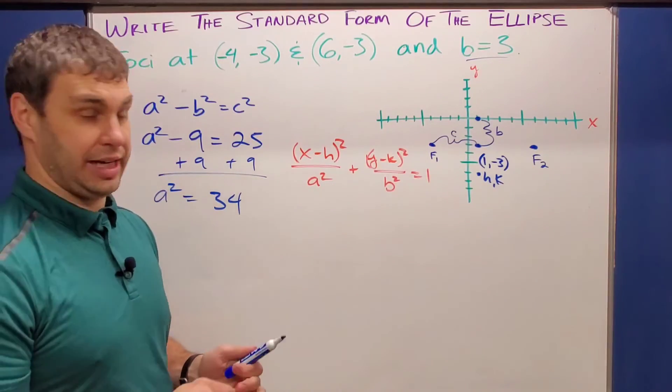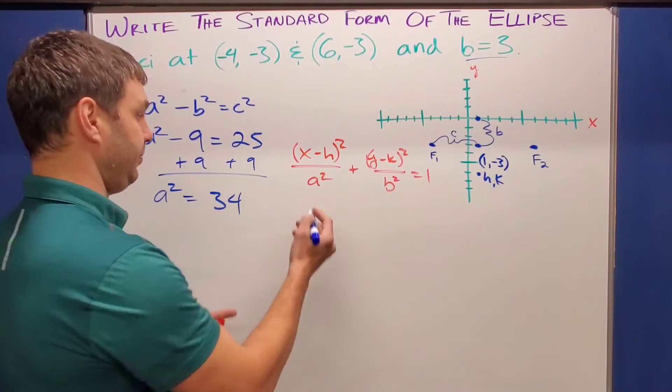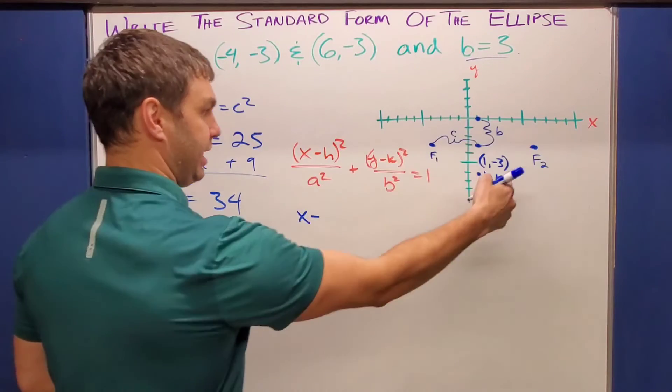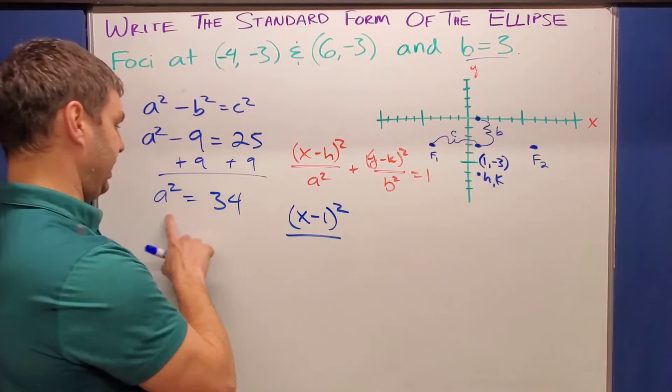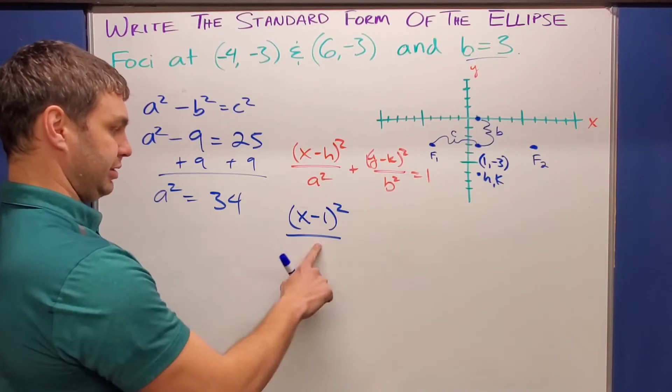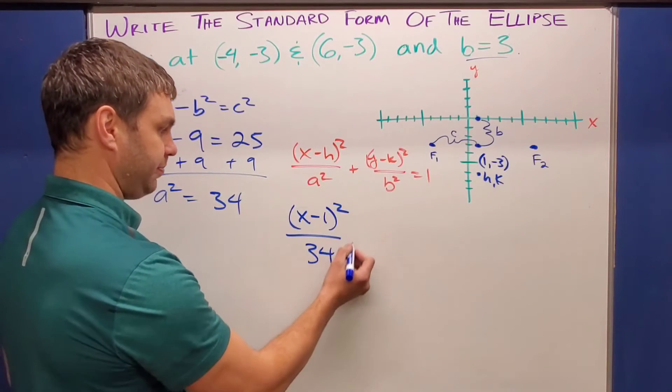All right. Or in my case, if I input this information in here, X minus my H X minus one quantity squared over the A squared. Again, I don't need to simplify this because I need to just put a 34 down here plus,